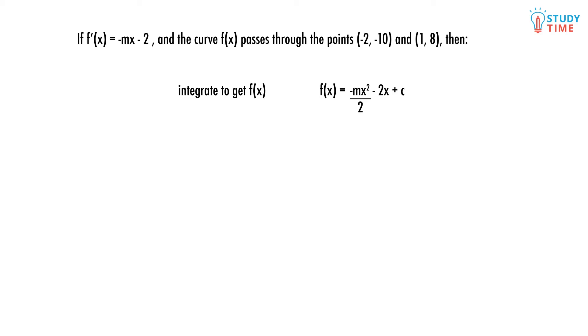Since it passes through the point (-2, -10), we can substitute these x and y values in. If we rearrange this equation, we see that C equals -6 plus 2M. But we're not finished yet—what's M?